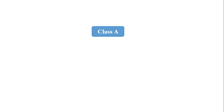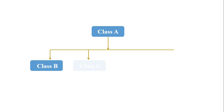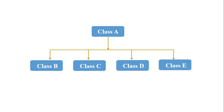Let's understand this with a diagram. Here class A is the base class. In hierarchical inheritance there is a single base class and multiple derived classes, so from class A we can derive multiple derived classes — for example class B, class C, class D, and class E. This type of inheritance is called hierarchical inheritance. Multiple derived classes means two or more derived classes.